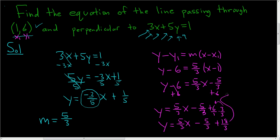So the final answer is y equals 5 over 3 times x. And you just add these. 18 plus negative 5 is 13. So 13 over 3. And that is the final answer. I hope this helps.